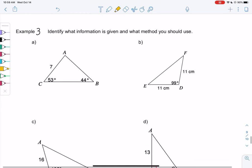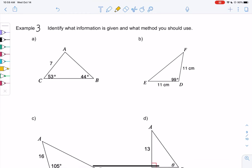So in example three, what information is given and then what method should you use? So in example A, we have side B because it's opposite angle B is 7. Angle C is 53, and angle B is 44. So we have two angles and a side.